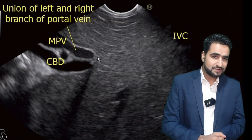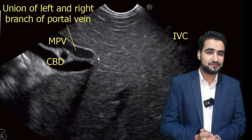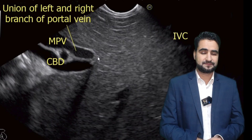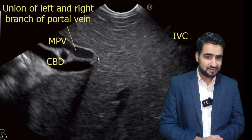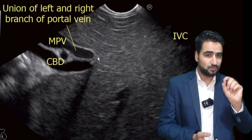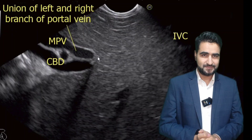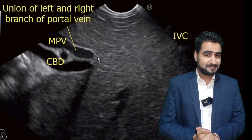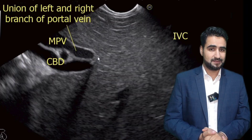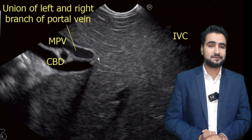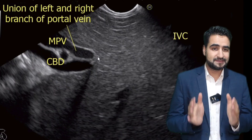With further clockwise rotation, we now reach a critical junction: the confluence of the left and right portal vein branches. Here, you can identify the main portal vein before its bifurcation, with the inferior vena cava appearing posteriorly as a large anechoic structure. The common bile duct sits adjacent to the portal vein. This union point is a key anatomical landmark because it represents the portal bifurcation — a crucial area in both diagnostic imaging and surgical planning.